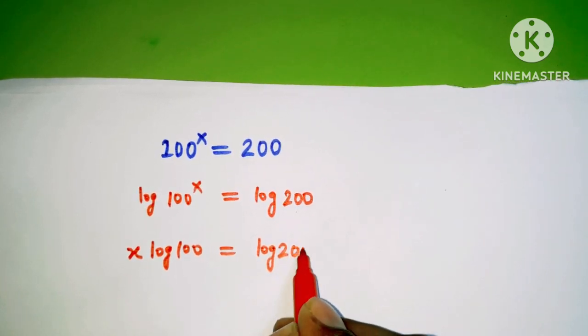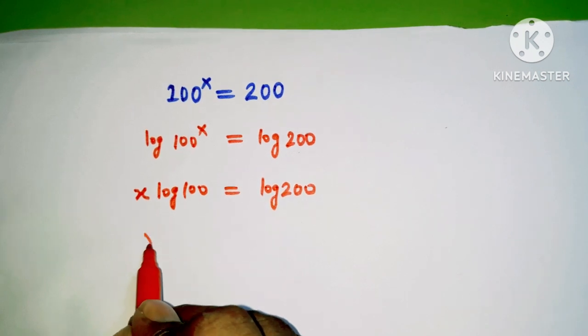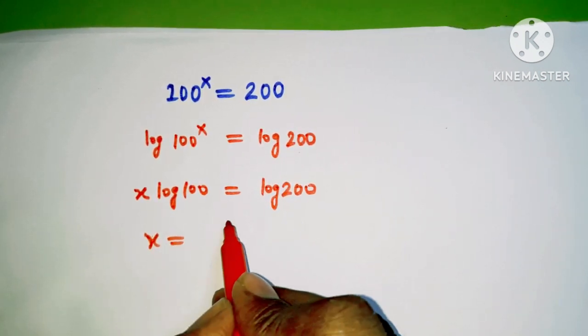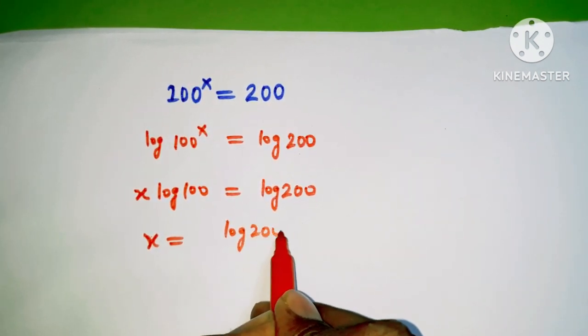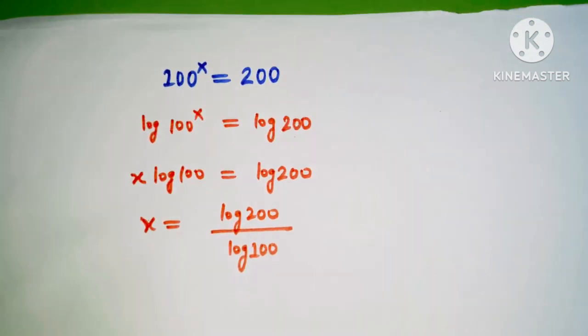And now x is equal to log 200 divided by log 100.